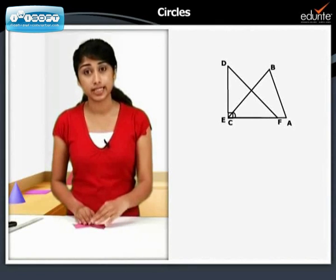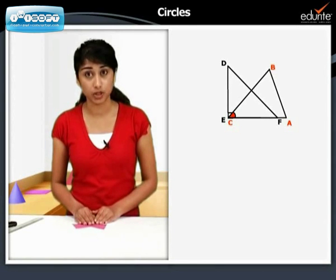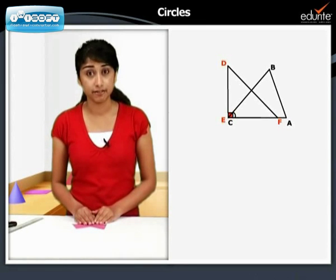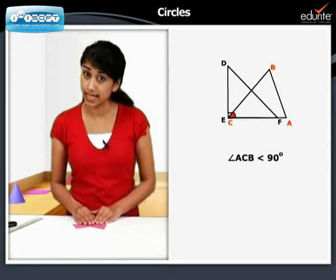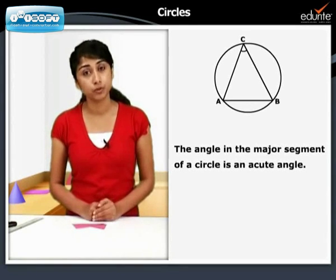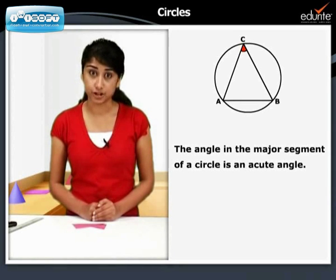You can see that angle ACB is definitely smaller than angle DEF. But angle DEF is 90 degrees, so angle ACB is less than 90 degrees. In this activity, we have proved that the angle in the major segment of a circle is an acute angle.